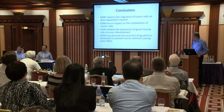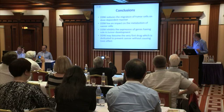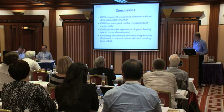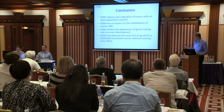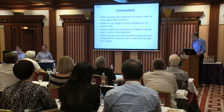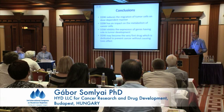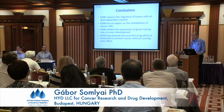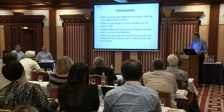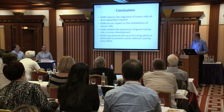The conclusion of this section: DDW can reduce migration of tumor cells, DDW has impact on metabolites, and DDW inhibits expression of genes having key roles in tumor development. That way, DDW could be the first drug candidate used for prevention — unlike some chemotherapy agents tried as preventive agents, which could reduce cancer risk but sometimes killed healthy patients.